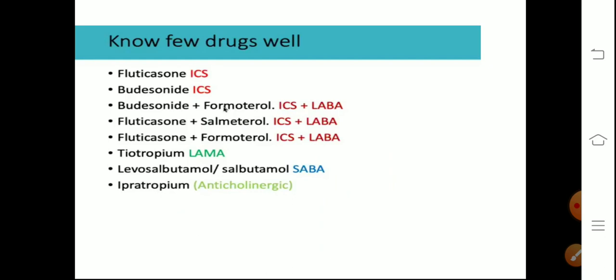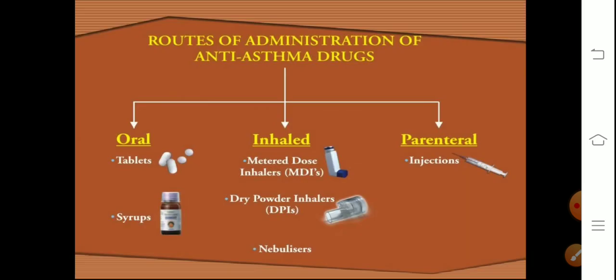Commonly used drugs: fluticasone and budesonide are inhaled corticosteroids. Combinations include formoterol and salmeterol. Tiotropium is a long-acting anticholinergic. Levosalbutamol and salbutamol are SABAs, and ipratropium is an anticholinergic. Anti-asthma drugs can be administered by three routes: oral (tablets and syrups), inhaled, and by injection. All asthma drugs should ideally be taken by the inhaled route.